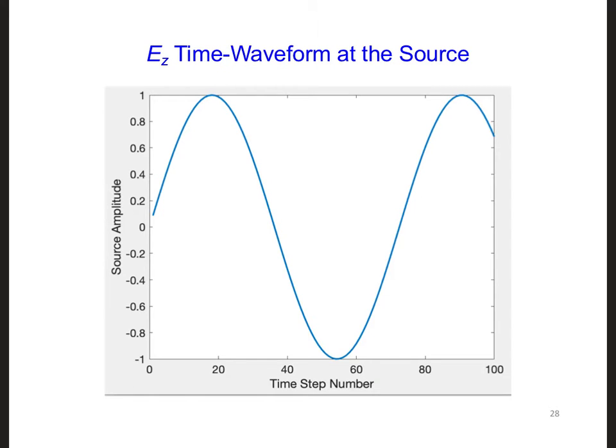Here is a plot of the electric field time waveform at the transmitter over the first 100 time steps, the time span of our simulation right now. We can see that the source has already cycled through more than a wavelength, and the amplitude is 1, as we were expecting for a hard source.